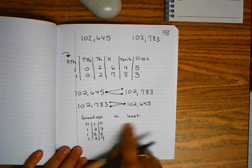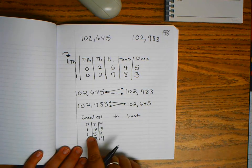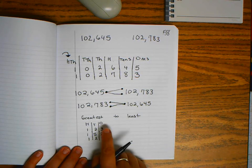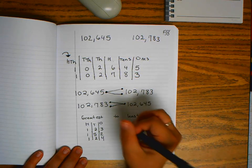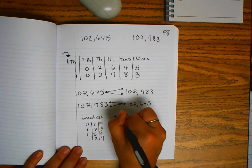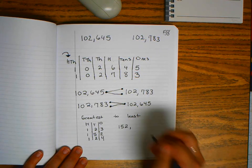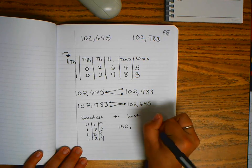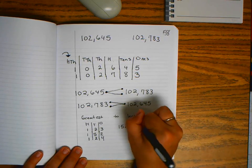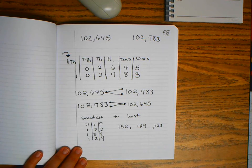Greatest to least is biggest to smallest. My largest number was 152, my smallest was 123, so 124 would go in between.